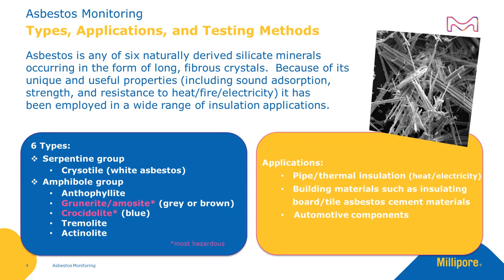The six types of asbestos fall into two groups. The serpentine group, containing chrysotile, or white asbestos. The amphibole group, containing anthophyllite, grunerite, or amosite, which is brown asbestos, crocidolite, or blue asbestos, tremolite, and actinolite.